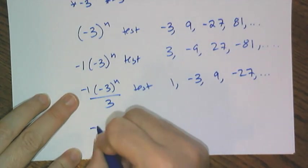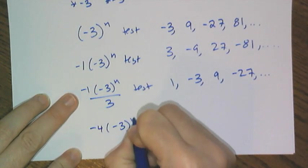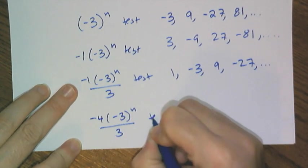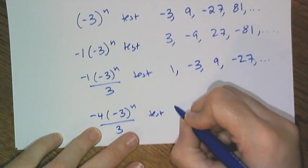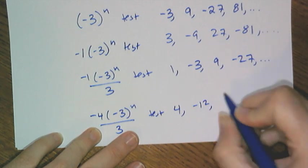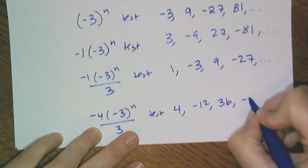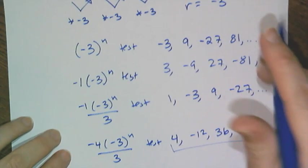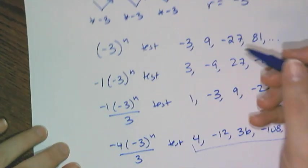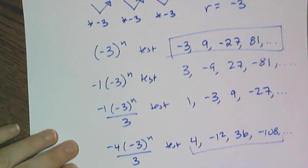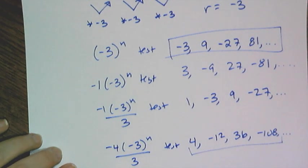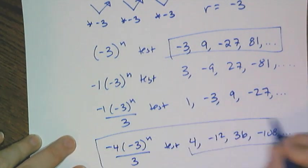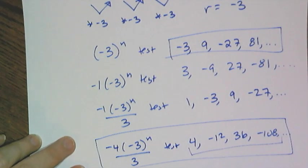So if I take this and I multiply it by 4, and I'm going to write that as negative 4 times negative 3 to the n over 3, and I test it, I'm going to get this sequence multiplied by 4 for negative 12, 36, negative 108. Now you could have done this in a single step if you recognized right here that you had to multiply it by negative 4 thirds, but the number of steps doesn't matter. What matters is, can you figure out the correct formula?